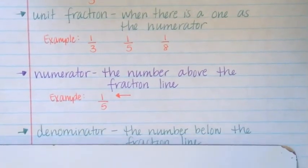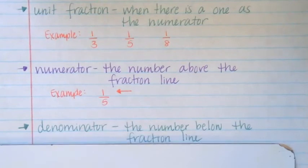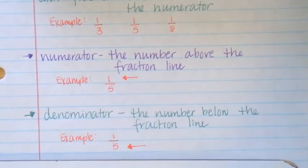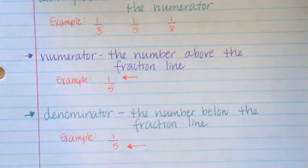He said denominator. Nice job. Denominator is the number below the fraction line. The five is in the denominator position.